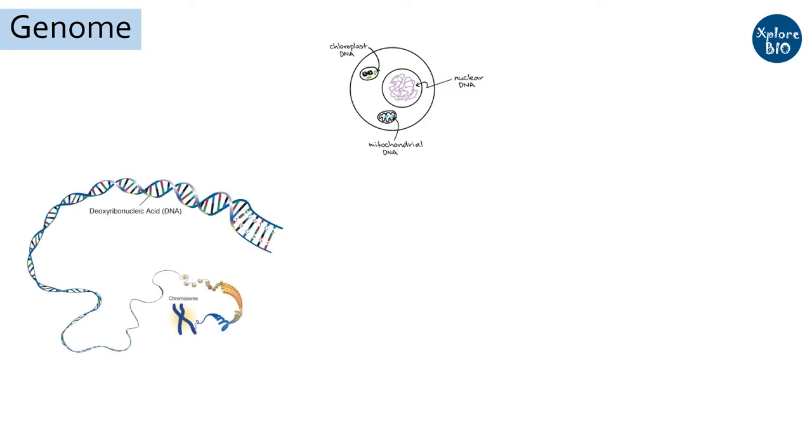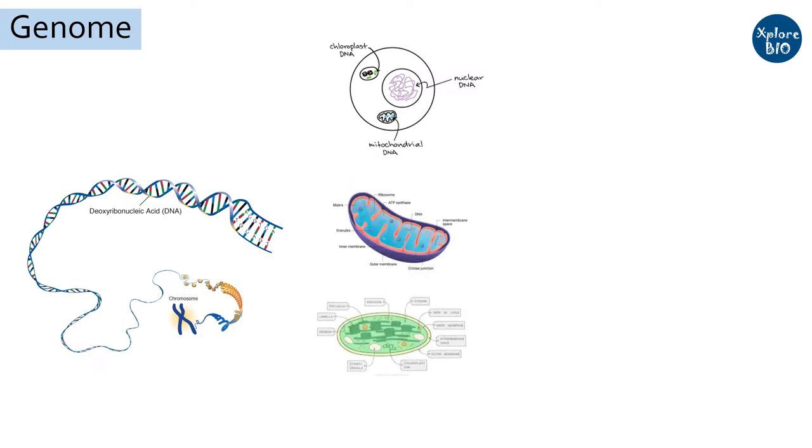Genome is the entire set of genetic material in an organism. In eukaryotes, it includes the nuclear genome that has DNA which is appropriately condensed to form chromosomes. Then there are circular mitochondrial genomes in animals, and plants have an additional plastidial genome. The totality of all these genetic materials is termed as genome.